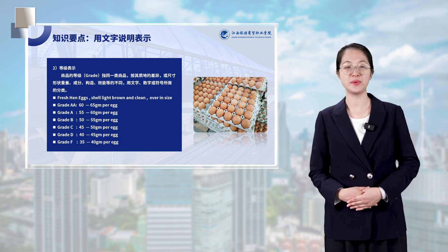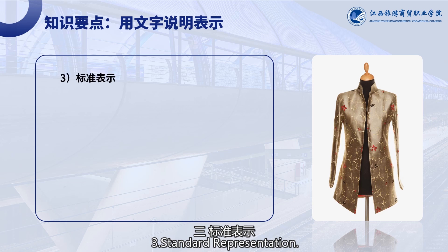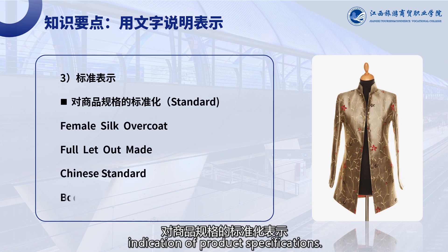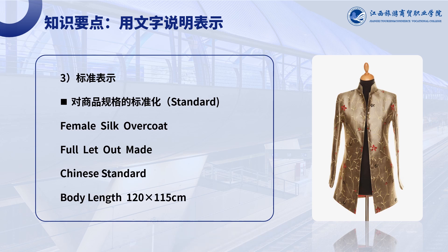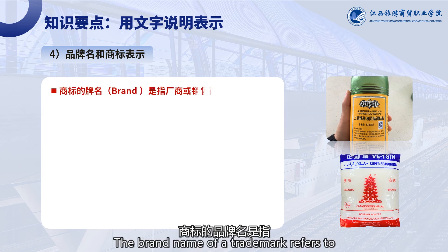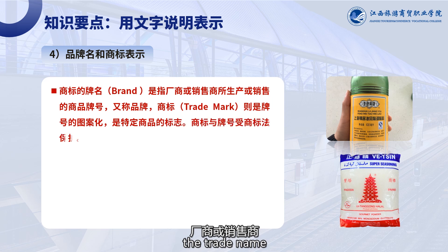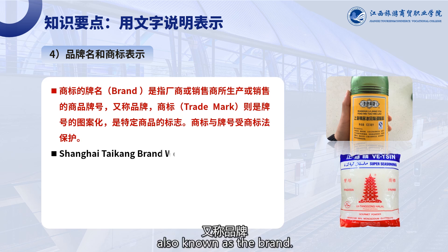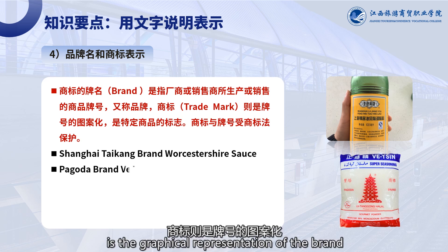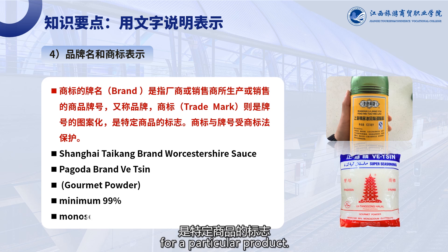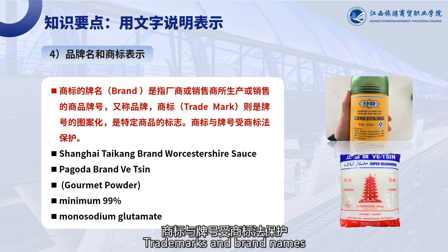Method 3: Standard representation. Standard representation refers to the standardized indication of product specifications. Method 4: Brand and trademark representation. The brand name or trademark refers to the trade name produced or sold by a manufacturer or seller, also known as the brand. The trademark is a graphical representation of the brand and serves as the specific symbol for a particular product. Trademarks and brand names are protected by trademark law.